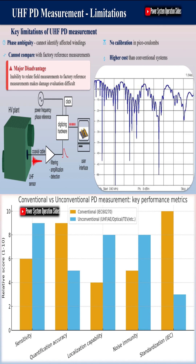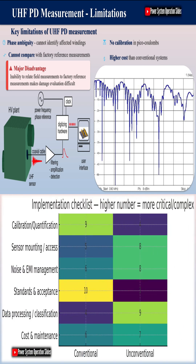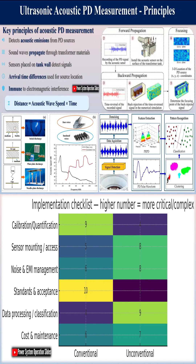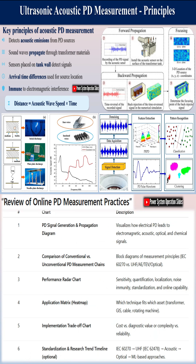The primary advantages of conventional PD measurements include their ability to be precisely calibrated against known references, providing standardized results that can be compared across different laboratories and against pass-fail criteria, typically 500 pC for factory acceptance. Additionally, phase-resolved PD patterns are widely available for different discharge defects and high-voltage components, enabling more accurate diagnosis of specific fault types.